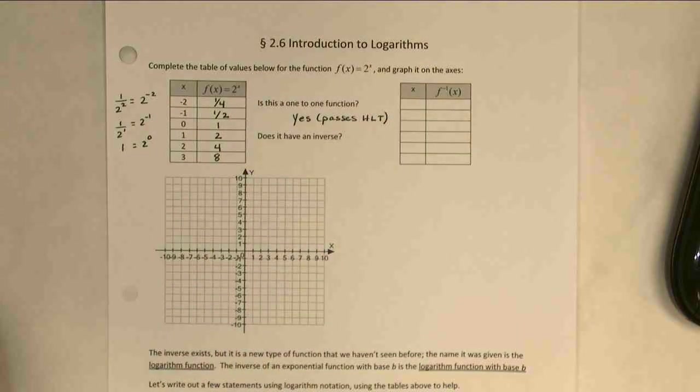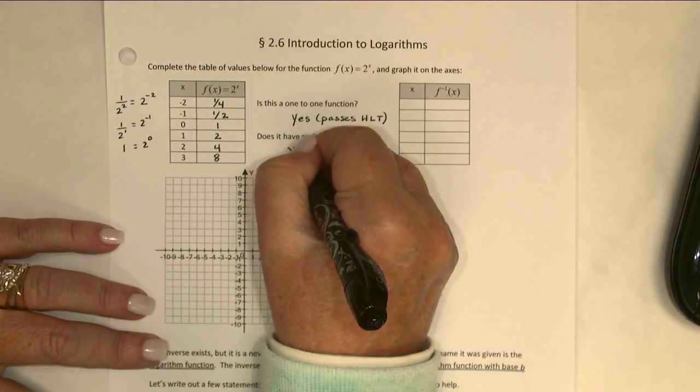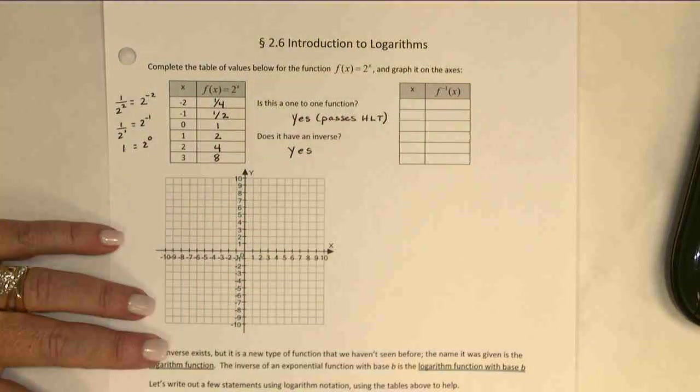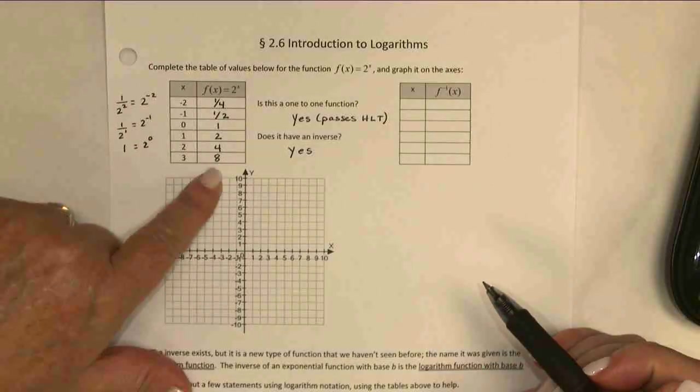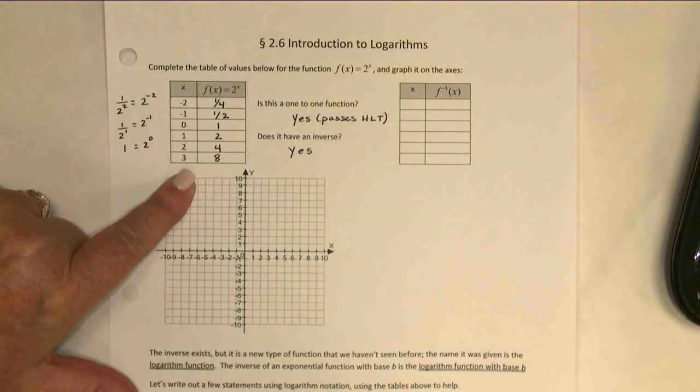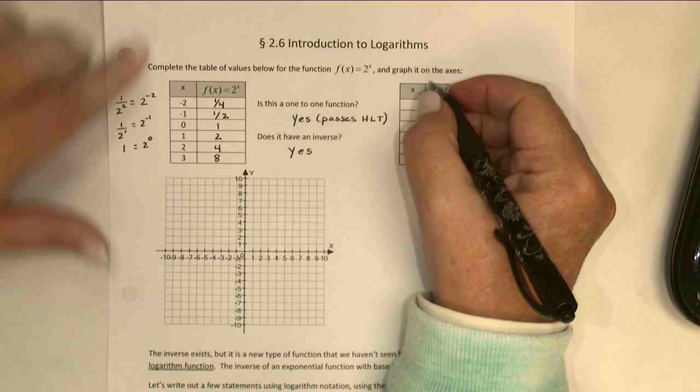It passes the horizontal line test. Since it's one-to-one, we can say yes, it has an inverse. And therefore, I could create a table of values for that inverse simply by reversing the x's and the y's from the first table. So let's do that right now.